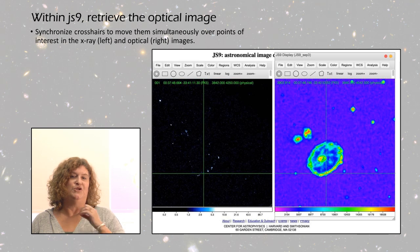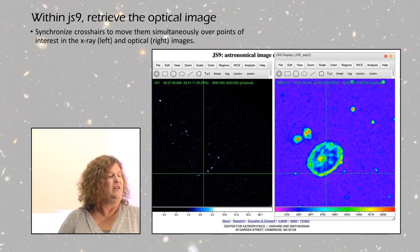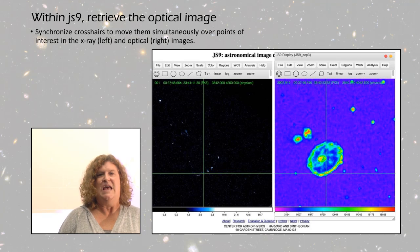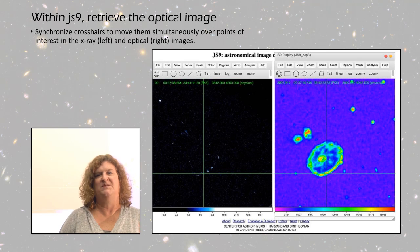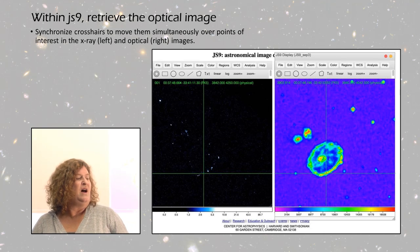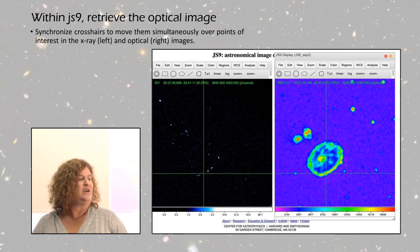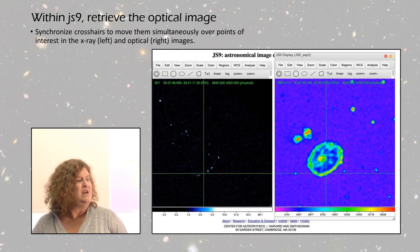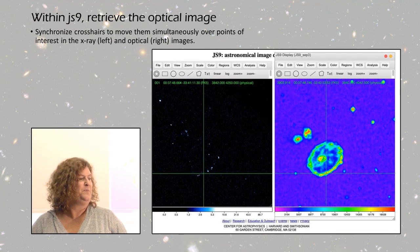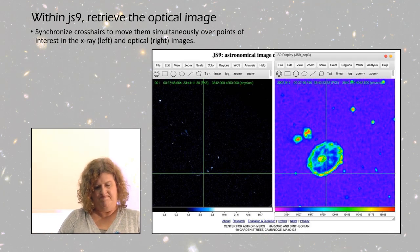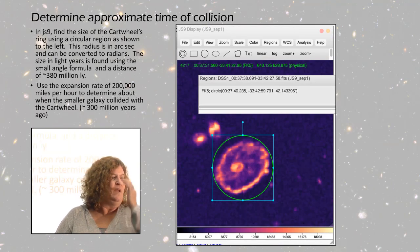JS9 allows you, right from JS9, to bring in the optical image right next to it. You can synchronize the x-ray and optical image so they're to the same scale and in the same spot. The coolest thing is locking crosshairs so that as you move your mouse over the x-ray one, the crosshairs move over the same portions in the optical one. You can see where in the optical image those x-ray sources correspond to.